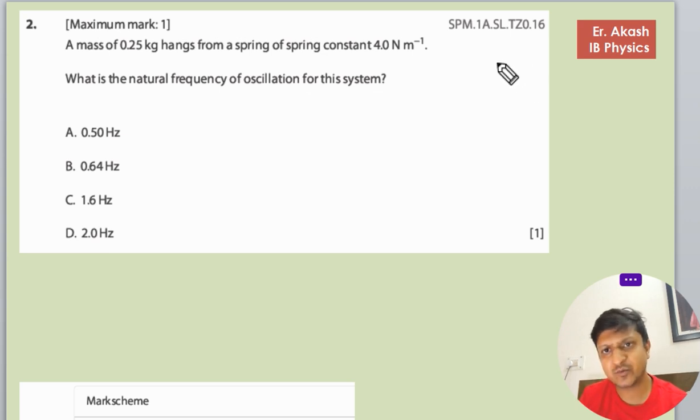In this question, there is a spring attached to a ceiling and a body is hanging from it. The spring constant k equals 4 newton per meter, and the mass of the body is 0.25 kg.